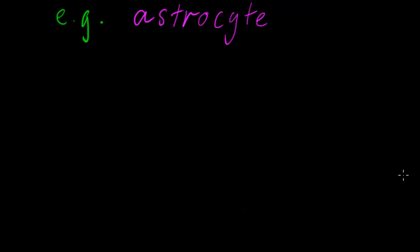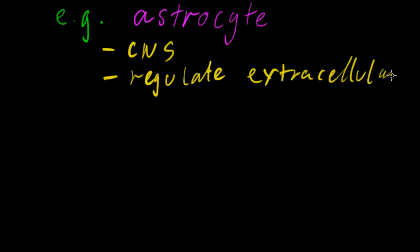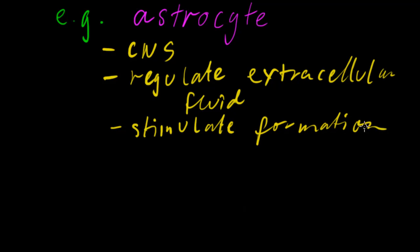Astrocytes are very interesting and they live in the CNS. They can regulate extracellular fluid. Another thing they can do is stimulate the formation of tight junctions.